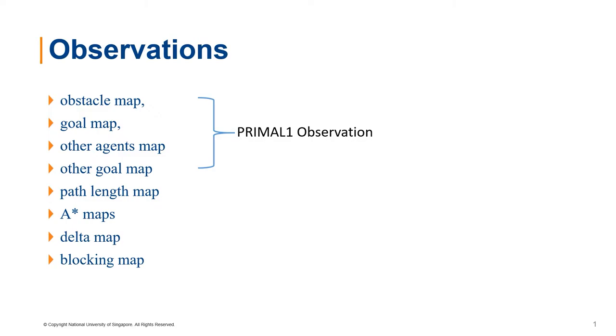They provide information about obstacles, position of other agents, goals of those observable agents, and the agent's own current goal position, if within the field of view.